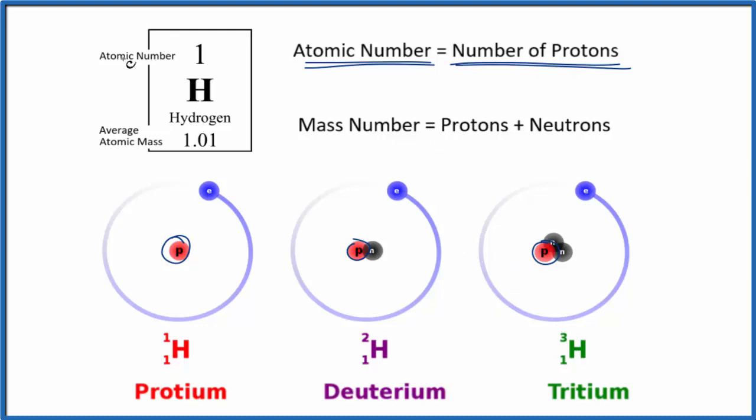When you look at the periodic table, the atomic number for hydrogen, that's just one because it has one proton. What's different for these isotopes of hydrogen is the mass number. So the mass number, that's the number of protons plus neutrons.